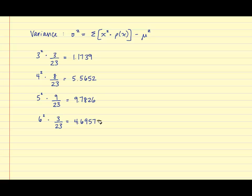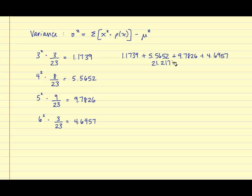Now we sum those values: 1.1739 plus 5.5652 plus 9.7826 plus 4.6957, which adds up to 21.2174. Now we subtract the mean squared: 21.2174 minus 4.5217 squared. Once we perform the math, we end up with 0.7716. So the variance is 0.7716.